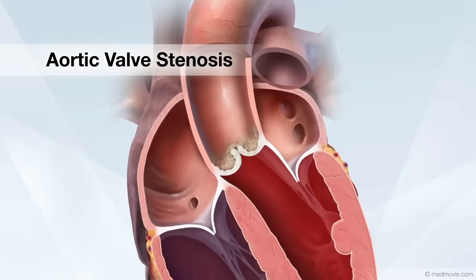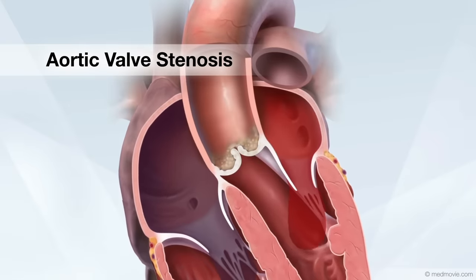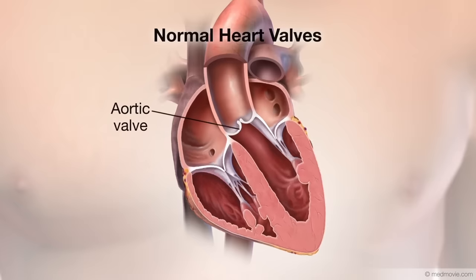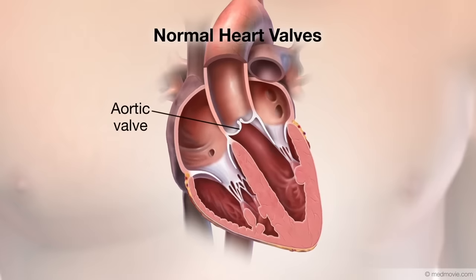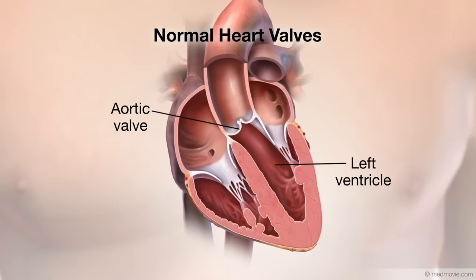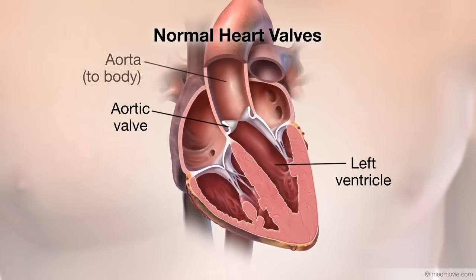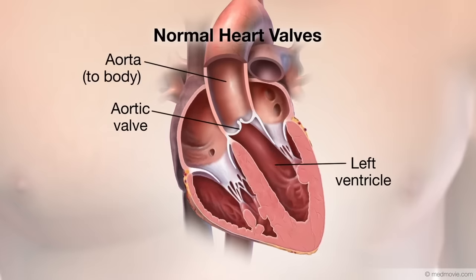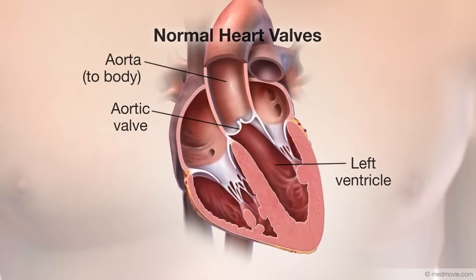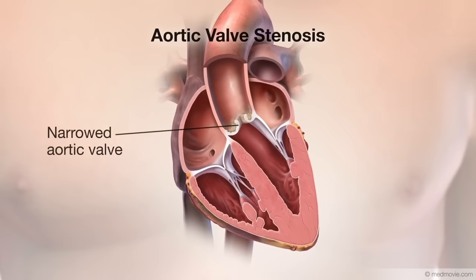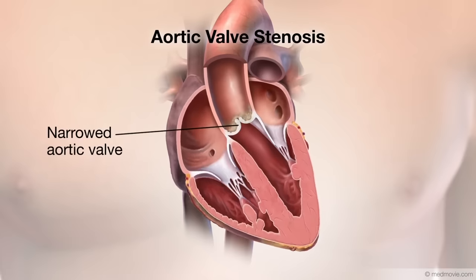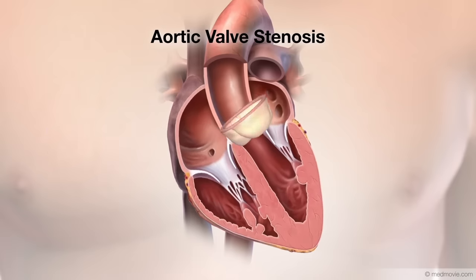Aortic valve stenosis is a condition in which the aortic valve is narrowed. The aortic valve is located between your heart's main pumping chamber, the left ventricle, and the major artery, the aorta, that carries blood to your body. The stenosis is caused by valve leaflets that are thickened, or calcified, and fused.